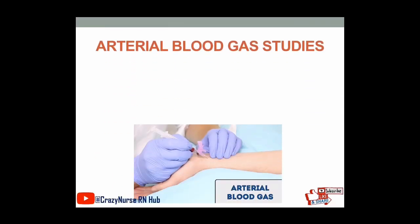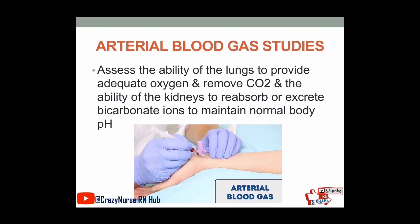Arterial blood gas studies assess the ability of the lungs to provide adequate oxygen and remove carbon dioxide, and the ability of the kidneys to reabsorb and excrete bicarbonate ions to maintain a normal body pH. Your ABG assesses the amount of oxygen and carbon dioxide in the body, and also the ability of the kidneys to reabsorb and excrete bicarbonate ions in order to maintain the pH level of the body.